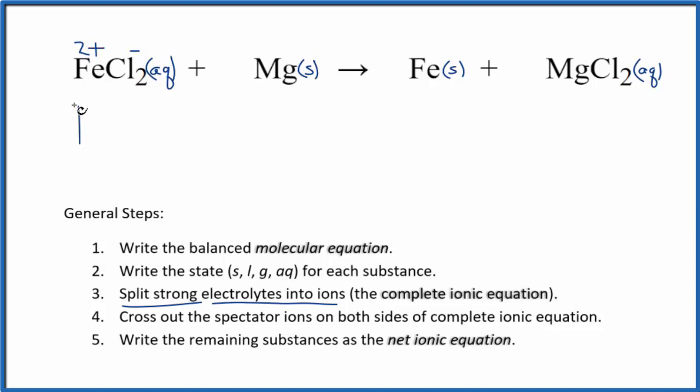So we have our iron 2 ion, that's that Fe²⁺. I'll write the states later, let's not do that now. Two of these chloride ions here, so 2 Cl⁻. And then the magnesium, we can't split that apart, that's just Mg, so we'll put Mg there. These are the reactants in our net ionic equation.